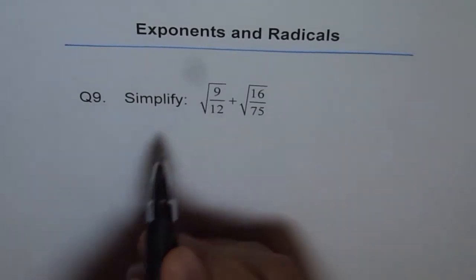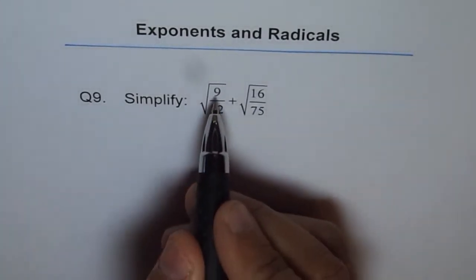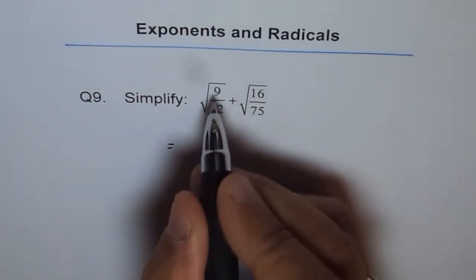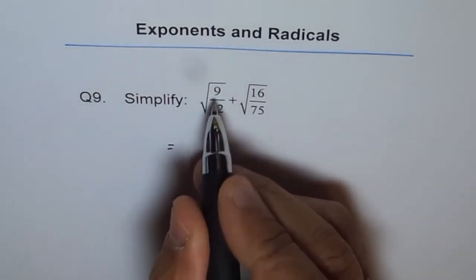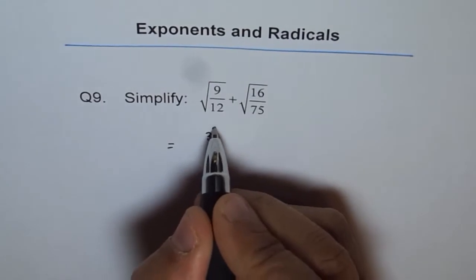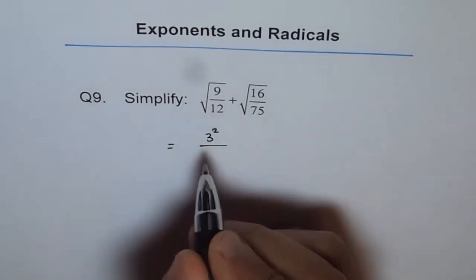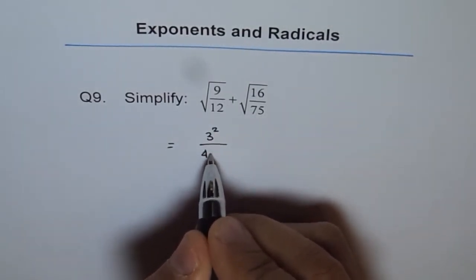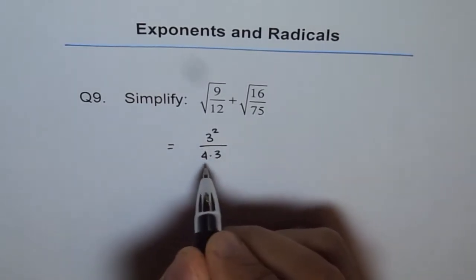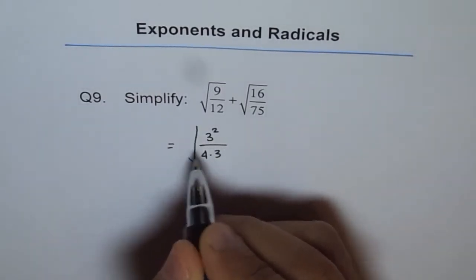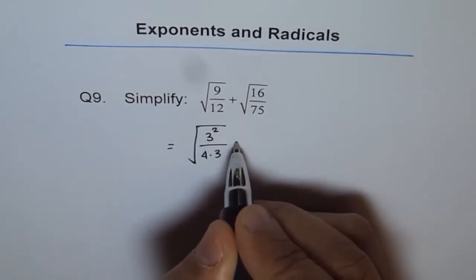As you know, 9 is a perfect square of 3, right? 3 squared is 9. So I could write 9 as 3 squared. So let me write 3 squared first here. And 12 is 4 times 3, so I am writing 4 times 3 is 12. Let me first write them within the square root.